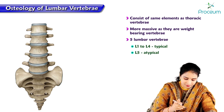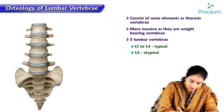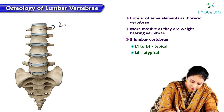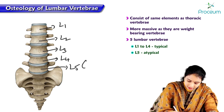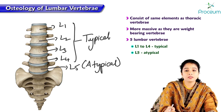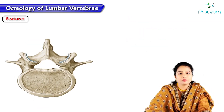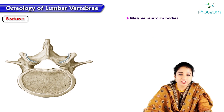Here is an image showing the lumbar vertebrae along with the sacrum. This is L1, L2, L3, L4, and L5. The fifth lumbar vertebra is atypical and the upper four are typical lumbar vertebrae. The features of lumbar vertebrae include massive reniform, that is kidney-shaped, bodies.